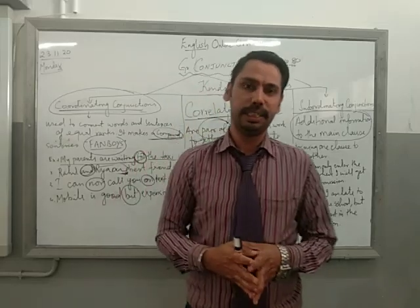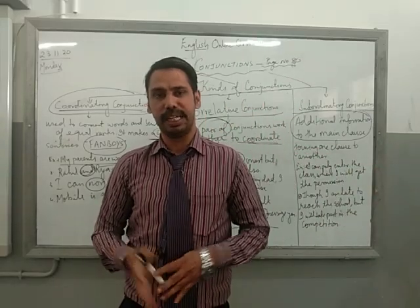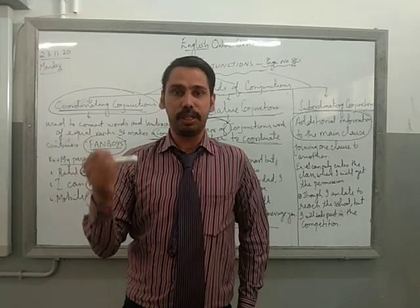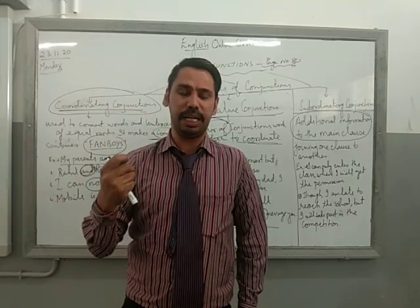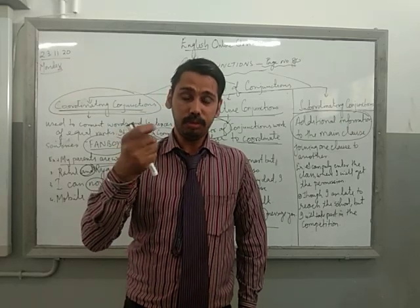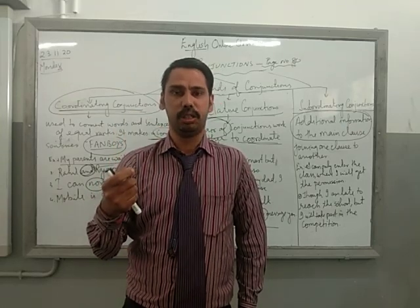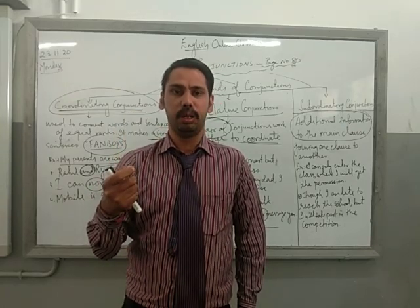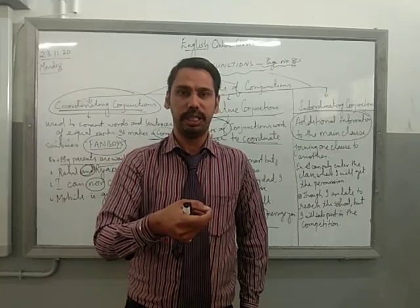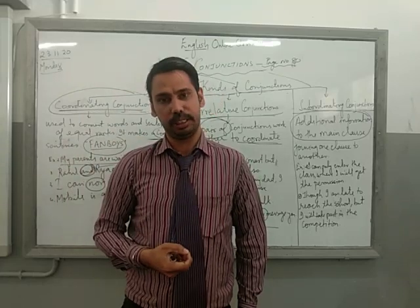An independent clause has a subject and a predicate, like a complete sentence. When I talk about a dependent clause, it is joined with the main clause and gives additional information about the sentence.